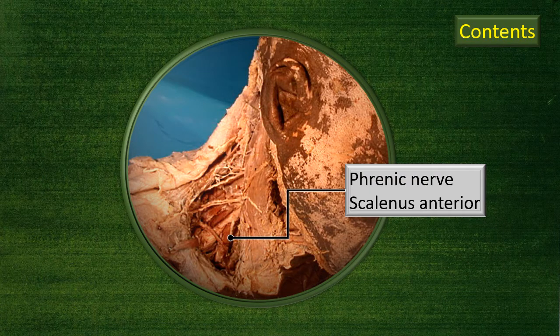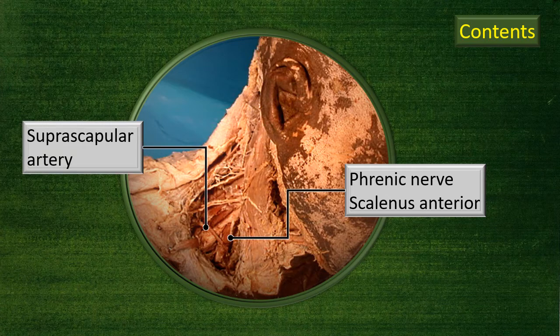The scalenus anterior is particularly identifiable because the phrenic nerve runs in front of it — that is the way to identify the scalenus anterior muscle. The artery visible here is the suprascapular artery, a branch of the thyrocervical trunk from the first part of the subclavian artery.